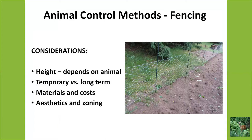Animal control methods: fencing is obviously one thing people think about. Some animals, fencing is super helpful; other animals, it doesn't really help. Consider how tall it's going to be - that depends on the animal. We'll talk about the difference between deer fencing and rabbit fencing when we get to specific animals. Also think about temporary versus long-term fencing. People think fencing has to be really expensive and something you hire somebody to do, but you can put up temporary fencing that's not very expensive, see if it works, and make it more permanent later.